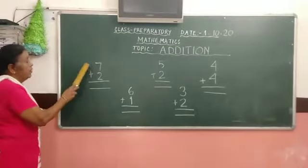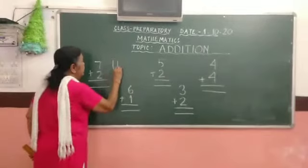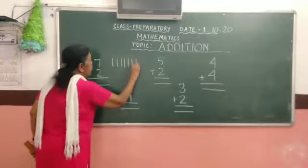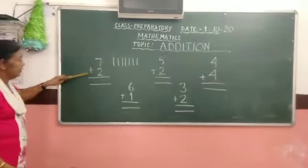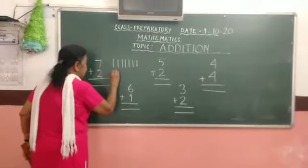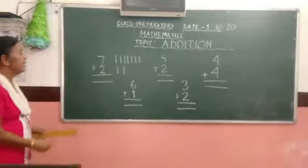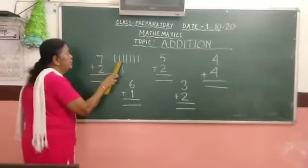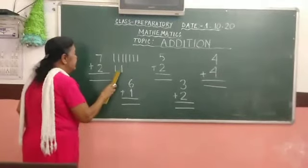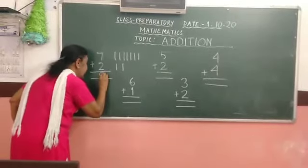Seven. We will draw seven lines. One, two, three, four, five, six, seven. And here two. Then we will draw two lines. One, two. Now total lines. One, two, three, four, five, six, seven, eight, nine. Then here we will write nine.